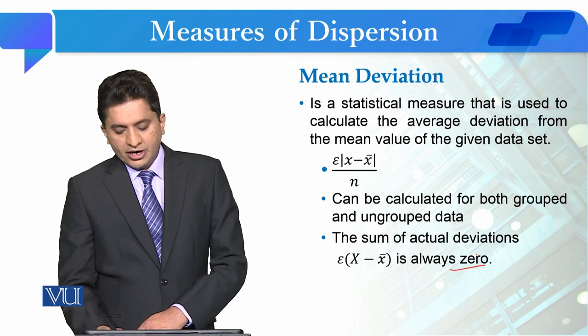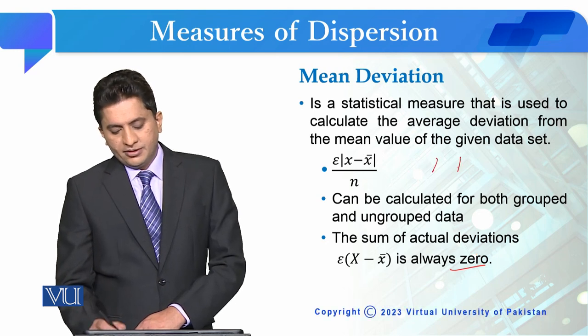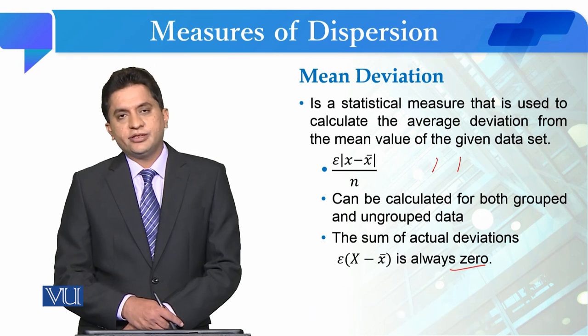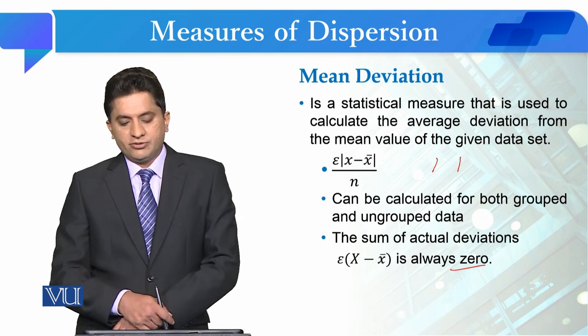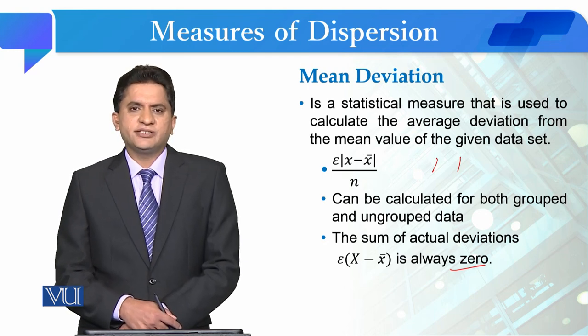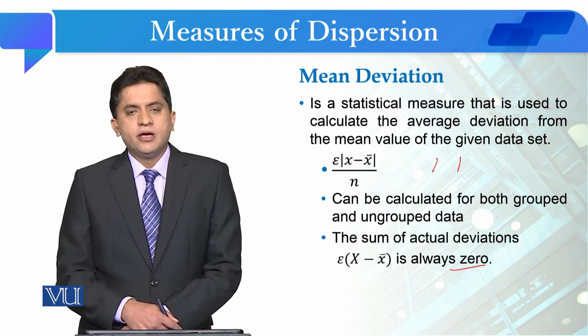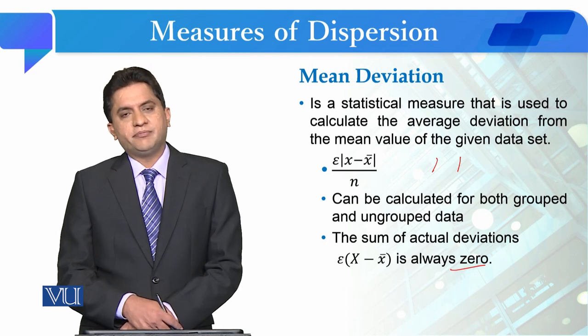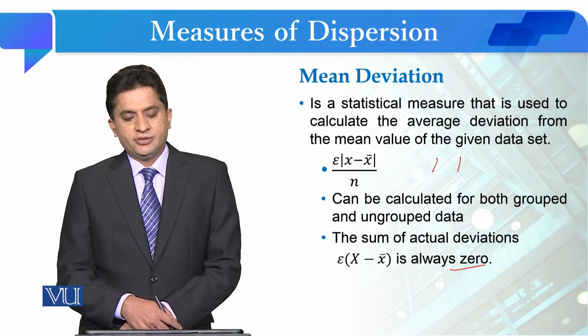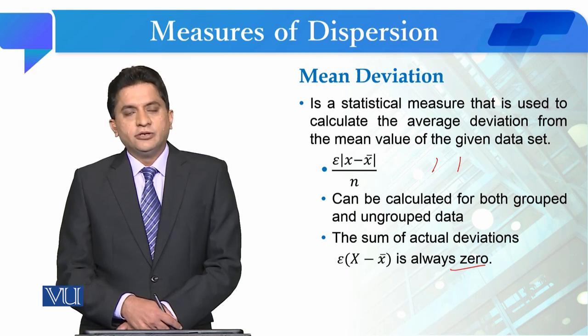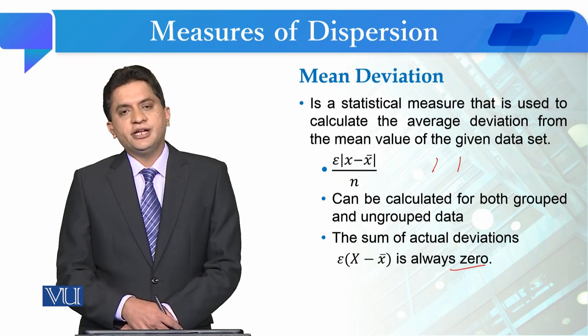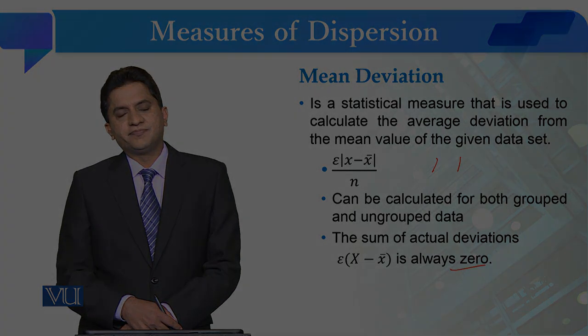That's why we use these brackets in which we ignore the sign of deviation and then calculate the value. You must have studied the mean deviation formula in basic statistics. These are the three basic measures of dispersion: range, interquartile range, and mean deviation. In the next module, we will discuss variance and standard deviation in detail.